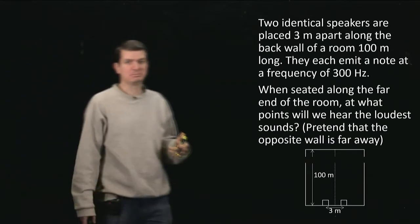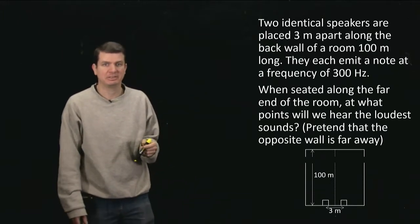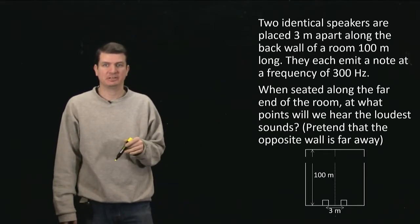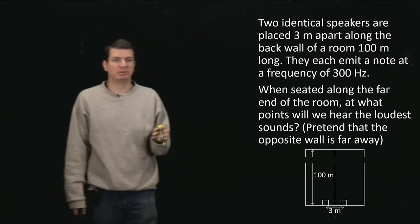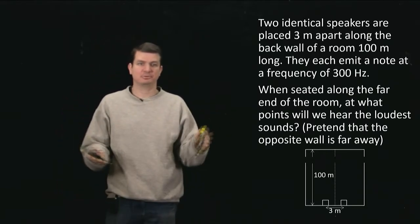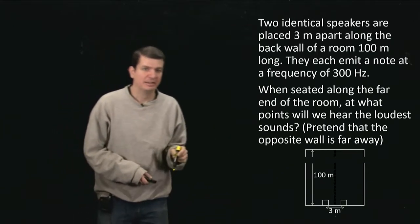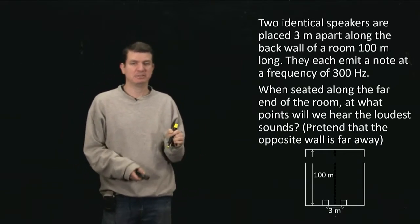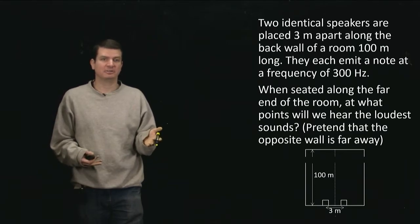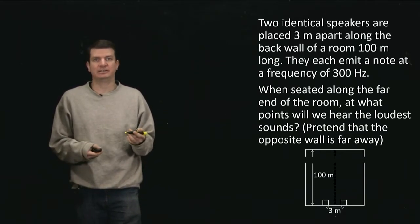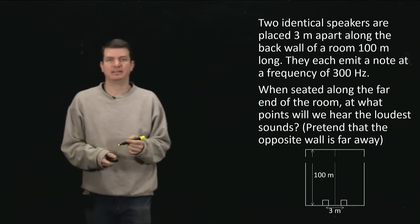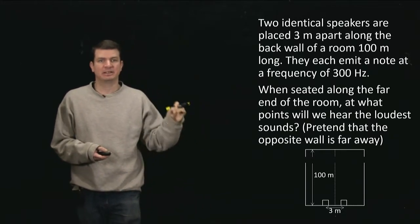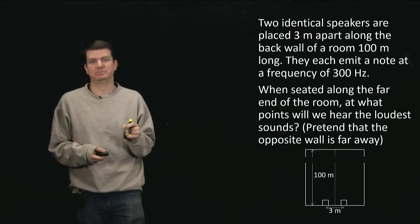Hello, and welcome to this problem-solving video on superposition and interference of sound waves. It's actually also a derivation of two-slit interference in disguise. To set up the problem, we're thinking about some gigantic room with two speakers at one end, there's some concert playing over the speakers, and we have unfortunately got some really cheap seats all the way at the back. We'd like to know if there's a place we could sit so we could still have some hope of hearing anything. Our best bet would be to sit where we're going to get perfectly constructive interference from these two speakers, and get basically the loudest possible sound.